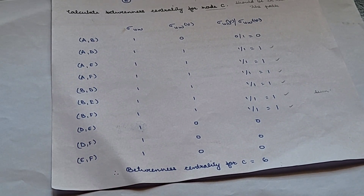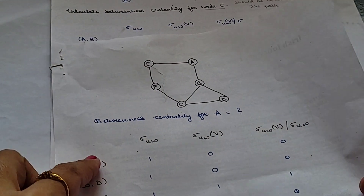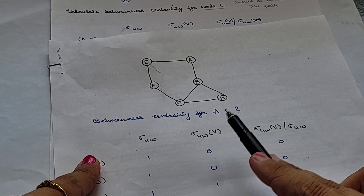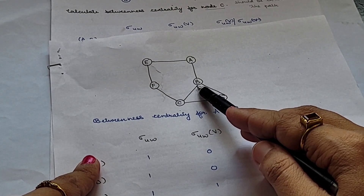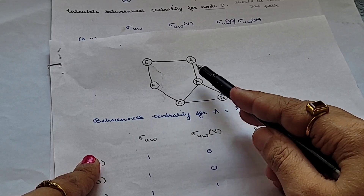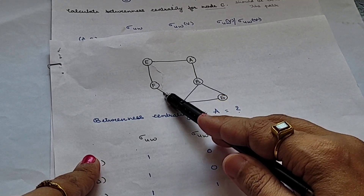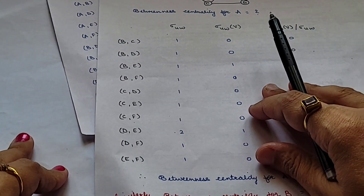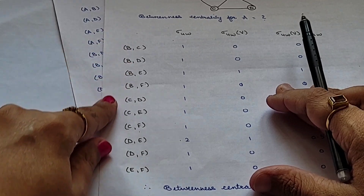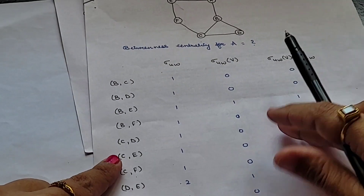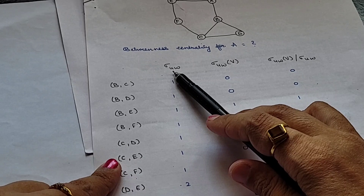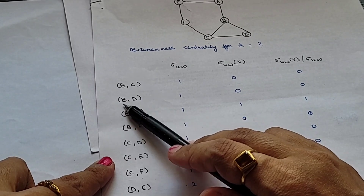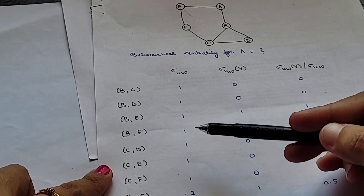This is how you find betweenness centrality. We will consider one more example. This is a simple graph and we are supposed to find out the betweenness centrality for node A. Firstly, write out all the possible paths: A to B, A to C, A to D, A to E, A to F, B to C, B to D, B to E, B to F, and so on. Find out the number of shortest paths for each pair between U and V.